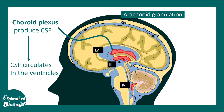There are three choroid plexuses lining the three ventricles: the lateral ventricle choroid plexus, or telencephalic choroid plexus; then the diencephalic choroid plexus, which lines the third ventricle; and lastly the fourth ventricular choroid plexus, or hindbrain choroid plexus.